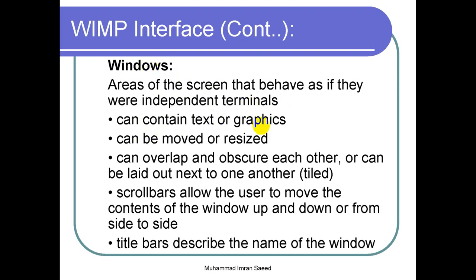There can be icons, labels, and everything inside a window. Windows can be moved, resized, minimized, maximized, and can overlap — if you open three, four, or five windows they can overlap and obscure each other, hide each other, or be laid out next to one another. We can tile them so each window sits beside the others and we can see all open windows simultaneously. The window also has scroll bars, allowing the user to move the contents up and down or left and right. The title bar describes the name of the window.